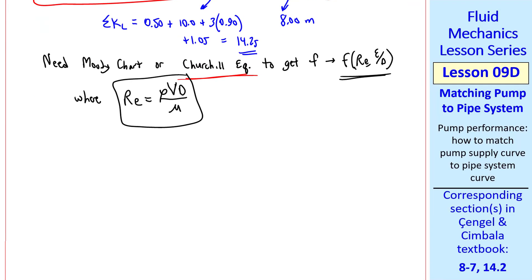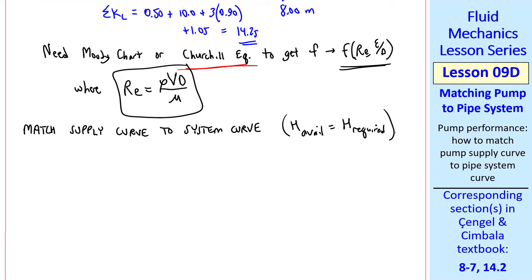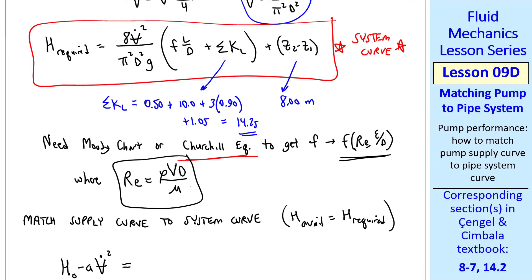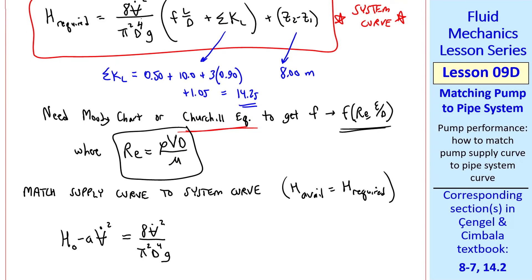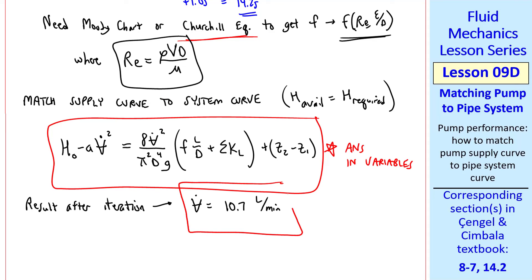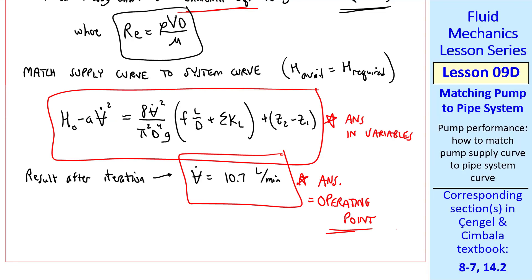The solution will involve some iteration, and the key is to match the supply curve to the system curve. In other words, set H available equal H required. H available comes from our pump performance curve, which we curve fitted, and we set that equal to H required from up here. This is really our answer in variables, but you can't just combine these terms and solve for V dot because F depends on V dot. So you have to do some iteration to solve this, or put it into software that can solve this equation for you. The result is V dot is 10.7 liters per minute. This is our final answer, which is our operating point.